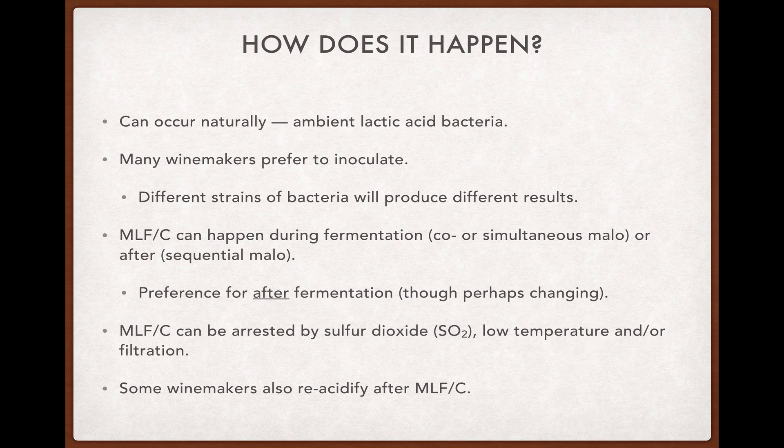Malolactic conversion usually doesn't happen before fermentation, but it can be initiated by inoculation during fermentation — in which case it's called co- or simultaneous malolactic conversion — or it's done after fermentation is complete, which is called sequential mallow. Both of these options have supporters, but there seems to be a preference among winemakers for sequential or post-fermentation mallow, though this may be changing as some evidence suggests that simultaneous malolactic conversion can intensify the fruit character of the finished wine.